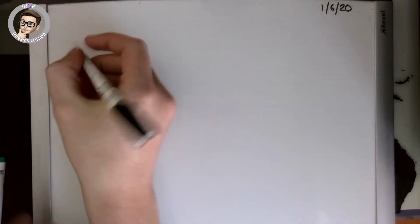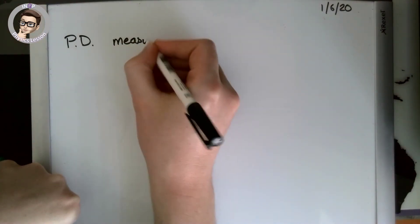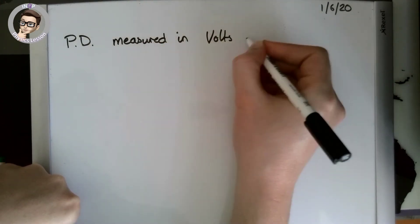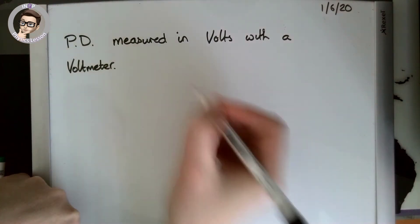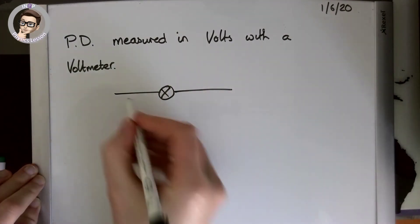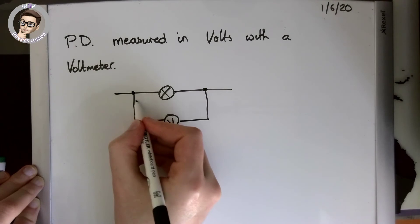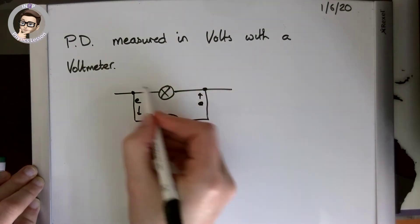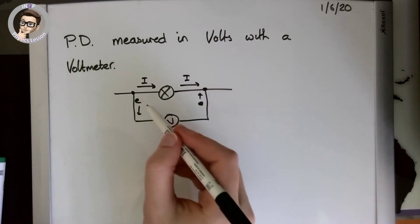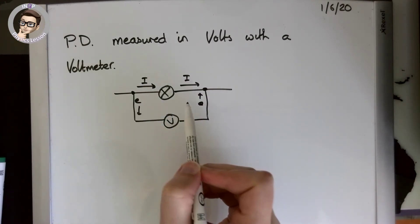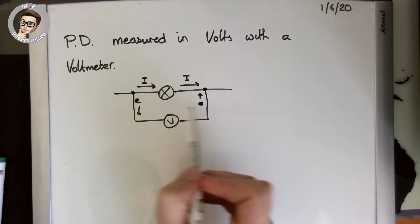Potential difference — we'll abbreviate as PD — is measured in volts using a voltmeter, and we always put that voltmeter in parallel. If we want to measure the potential difference across a bulb, the voltmeter goes in parallel because we want only a tiny fraction of electrons to flow through the meter and all the rest of the current to flow through the bulb. Really all we're doing is checking how much energy the electron has before and after the component and comparing the two.